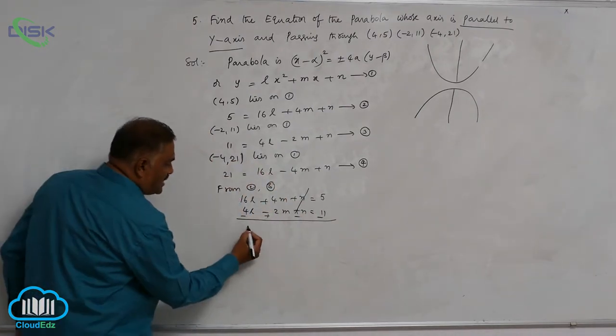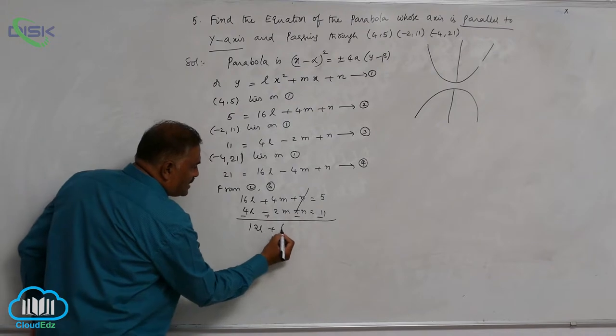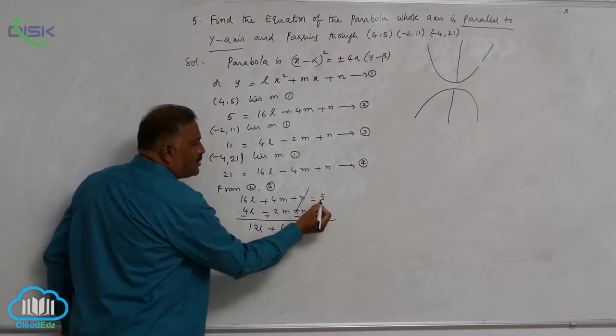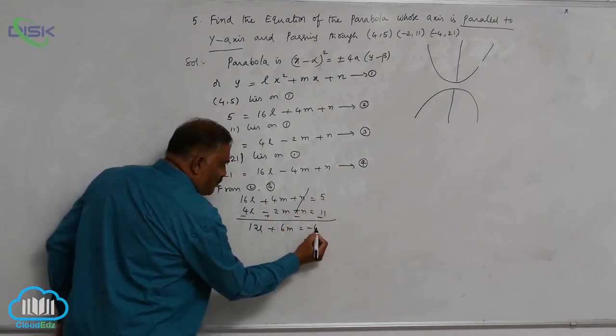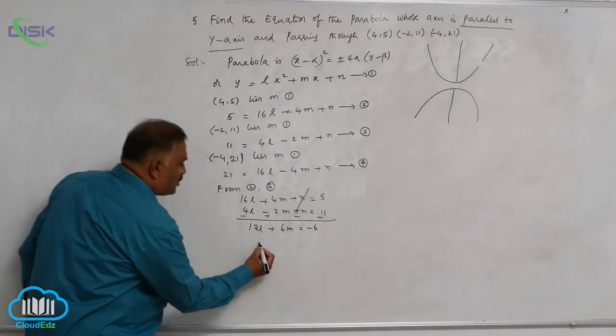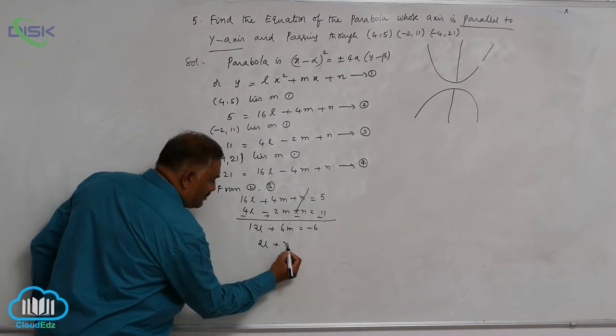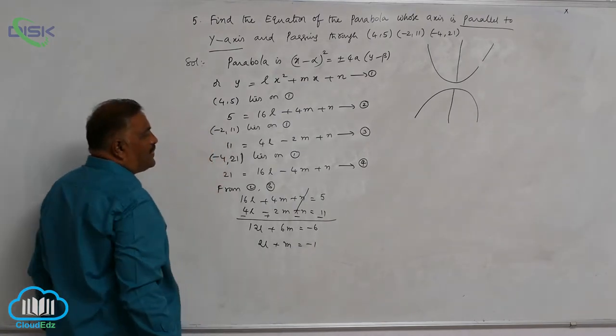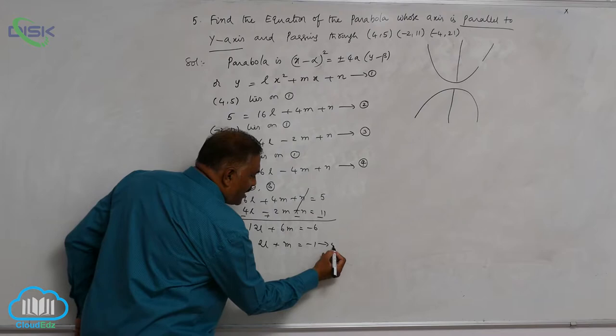Now this is 12l plus 6m is equal to 5 minus 11 minus 6. Easily cancellable by 6. So 2l plus m is equal to minus 1. Make it as equation number 5.